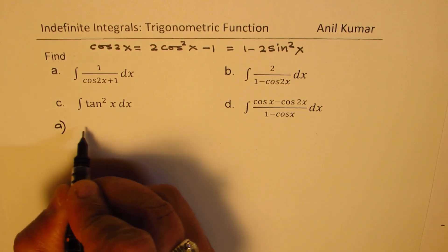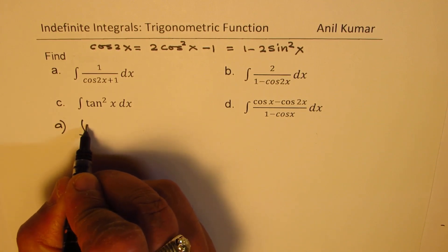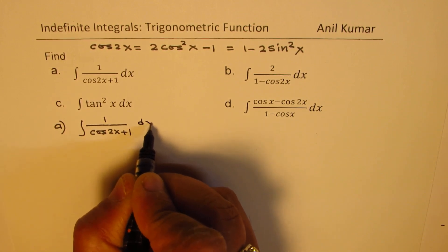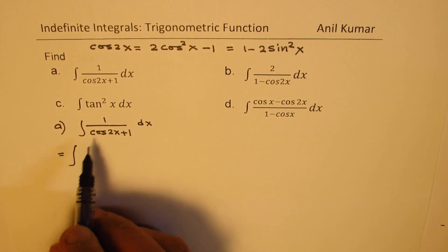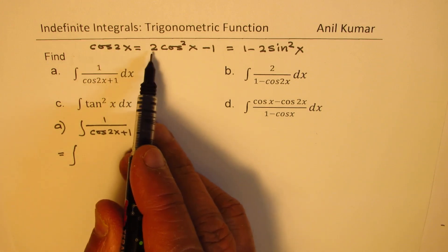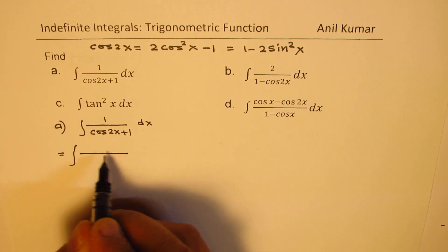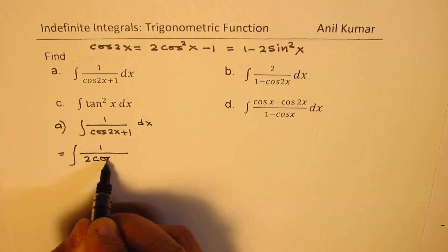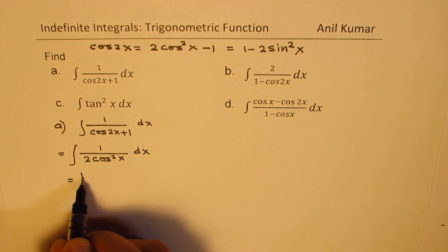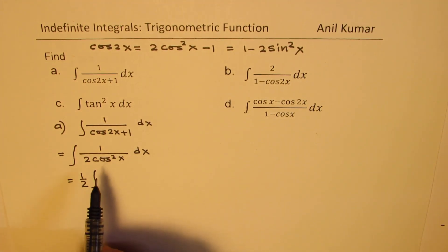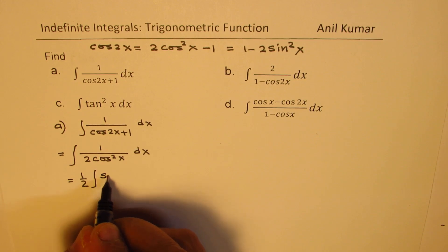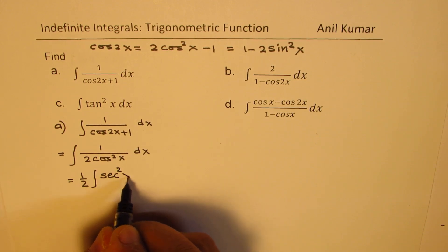Let's take up part (a) first, which is the integral of 1 over (cos 2x + 1) dx. We can write cos 2x + 1 as 2 cos squared x in the denominator. So this becomes the integral of 1 over 2 cos squared x dx. Half can be taken outside, and we are looking for the integral of 1 over cos squared x, which is secant squared x.